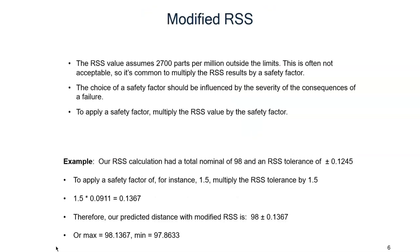Since 2,700 assemblies per million are likely to fall outside the RSS limits, these limits will often not meet the requirements for a given design. Therefore, we often multiply the RSS results by a safety factor. With a safety factor of 1.5, the RSS limits would be at plus and minus 4.5 standard deviations away from the mean. Therefore, we would expect 6.8 assemblies per million to fall outside of those limits.